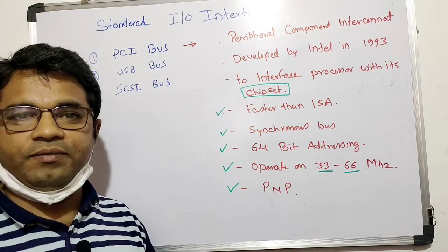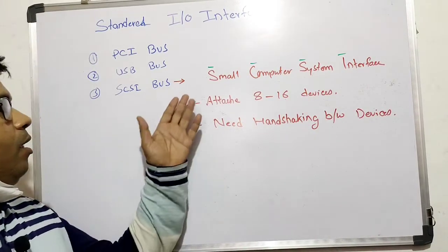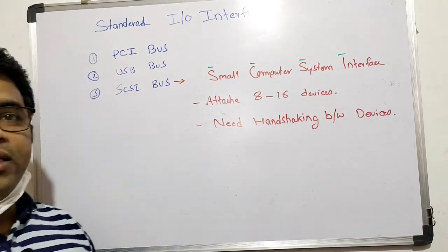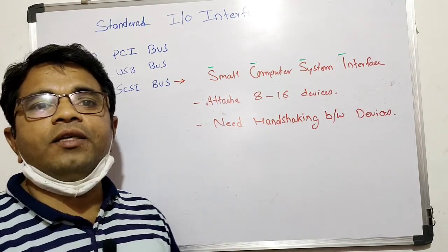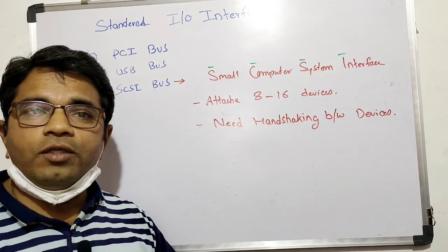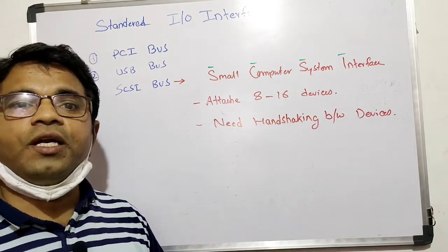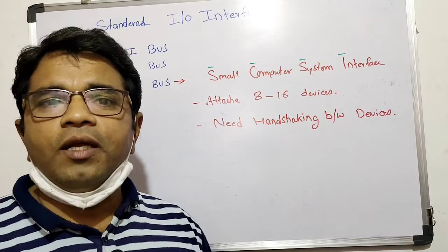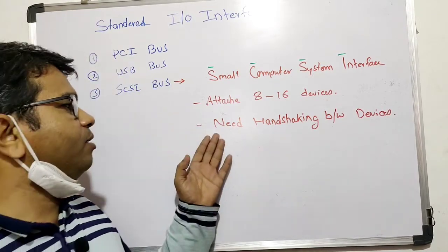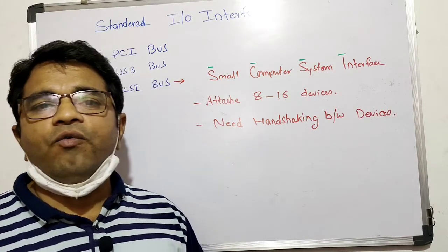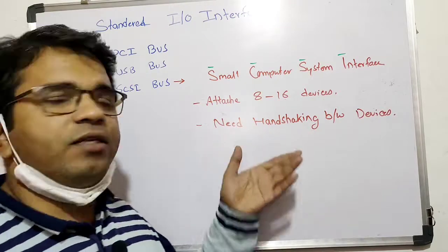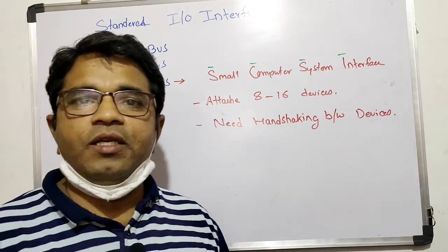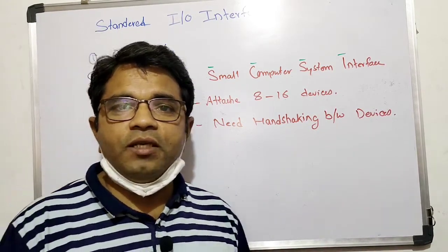The third standard bus is SCSI — Small Computer System Interface. This bus is used to connect SCSI devices, which are not synchronous and do not share the clock with the CPU or motherboard. With this bus we can connect 8 to 16 different devices at one time. This bus requires handshaking between devices when they want to interchange data — meaning it needs interrupt signals to start data transmission. This confirms that SCSI is not a synchronous bus with the CPU. That covers all the buses — thank you.